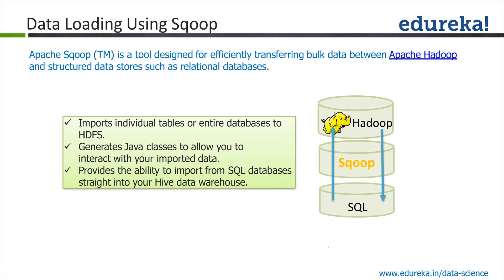We covered in the first class about schema on read and schema on write. In the case of RDBMS, you need to have the schema ahead of time before you start putting any data into the system. Whereas in Hadoop, you dump everything you have, and it's up to the application reading the data to read it in the appropriate format through input formats. So you define the schema on read, not on write — that's another very important distinguishing aspect between the two systems.